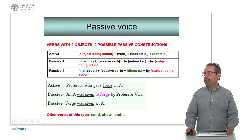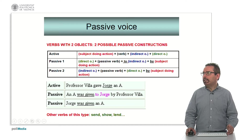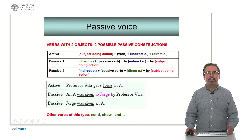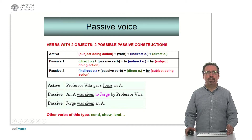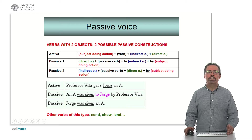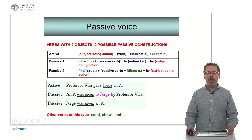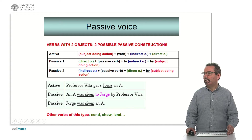Here we have the structures and an example to see it better. An active sentence such as 'Professor Billy Villa gave Jorge an A' could be translated into two different passive sentences. 'An A was given to Jorge by Professor Billy Villa' — in this case we use the direct object, the object which is more closely related to the verb. But we also have the possibility of a second passive sentence: 'Jorge was given an A.' This construction does not exist, for example, in the Spanish language, so be careful with this — it is specific to the English language.